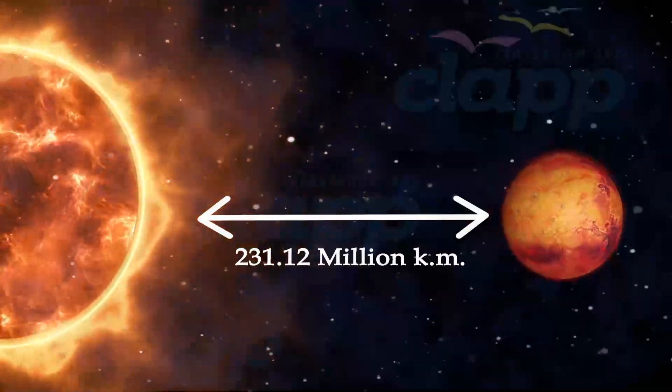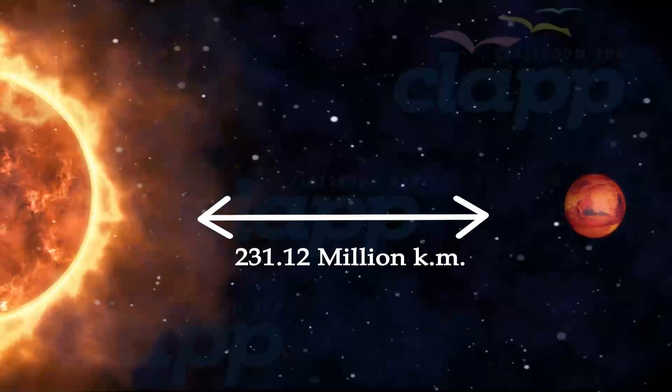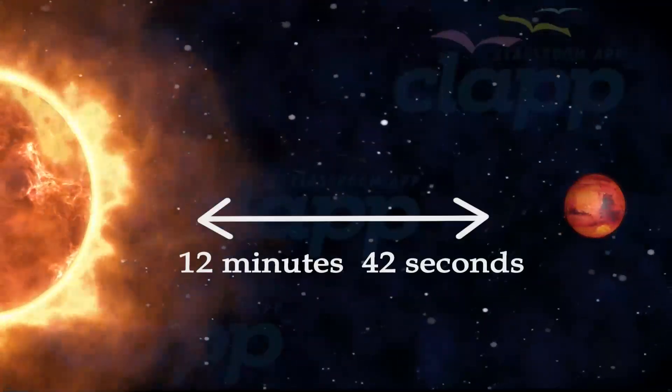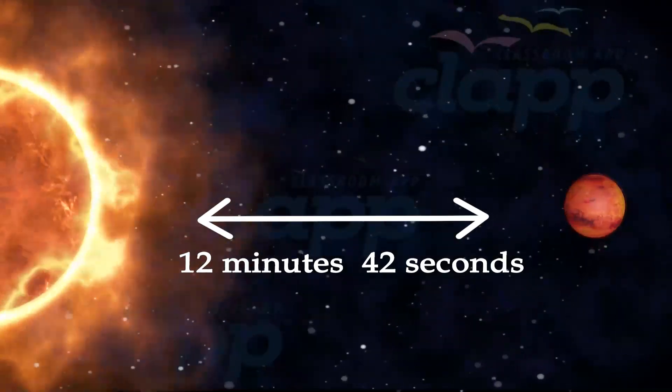Mars is at an average distance of 231.12 million kilometers away from the Sun. From this distance, it takes sunlight 12 minutes and 42 seconds to travel from the Sun to Mars.